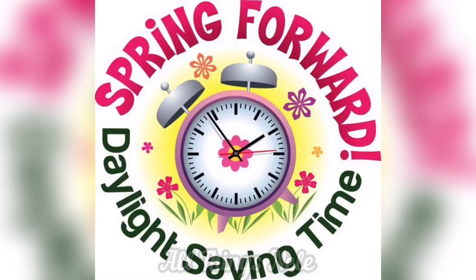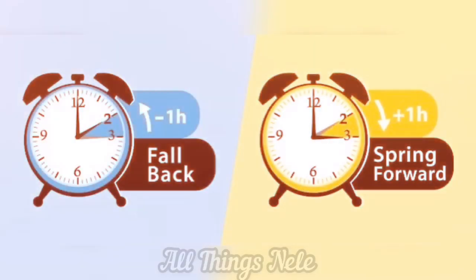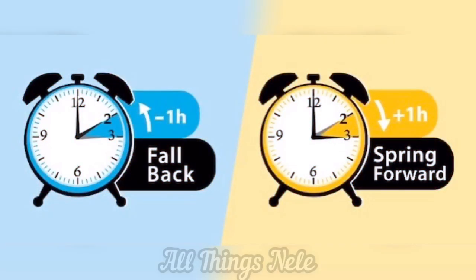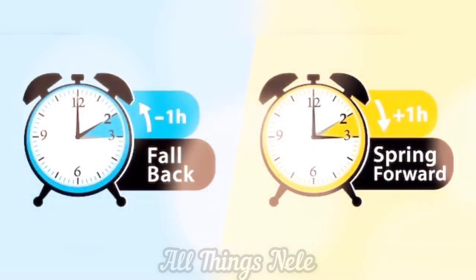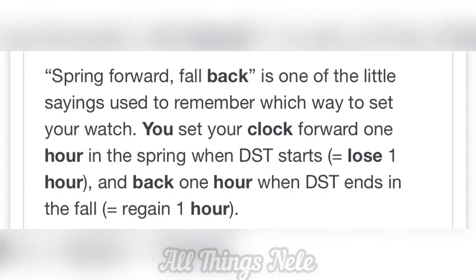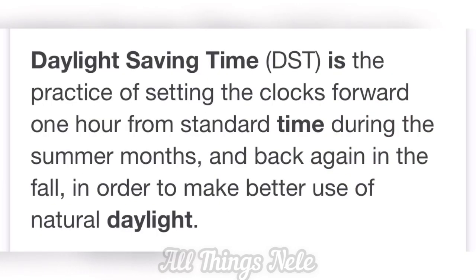And do we fall back in the fall? Daylight savings time is the practice of setting the clocks forward one hour from standard time during the summer months and back again in the fall, in order to make better use of natural daylight. However, it gets a little deeper than that.